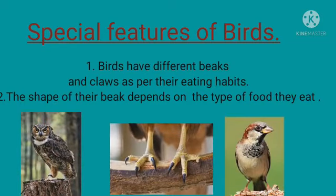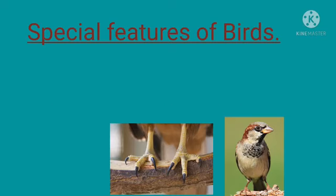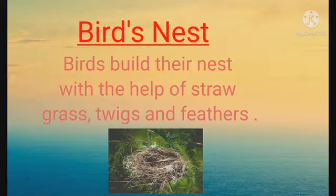Now let us talk about the special features of birds. We have already discussed that a bird's body is covered with feathers. Birds have different beaks and claws as per their eating habits. The shape of the beak depends on the type of food they eat. The beak helps the bird to eat food, catch prey, and change direction while they fly.